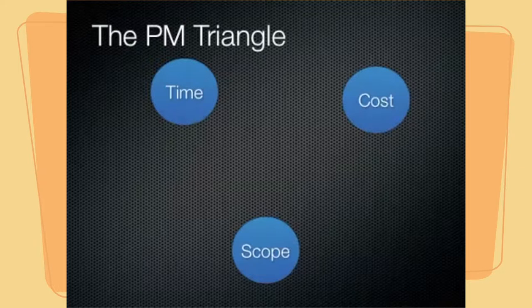Now, these three aspects of our project are interrelated and linked to each other. And we refer to this as a triangle because we can't change one of these project aspects without affecting the others.